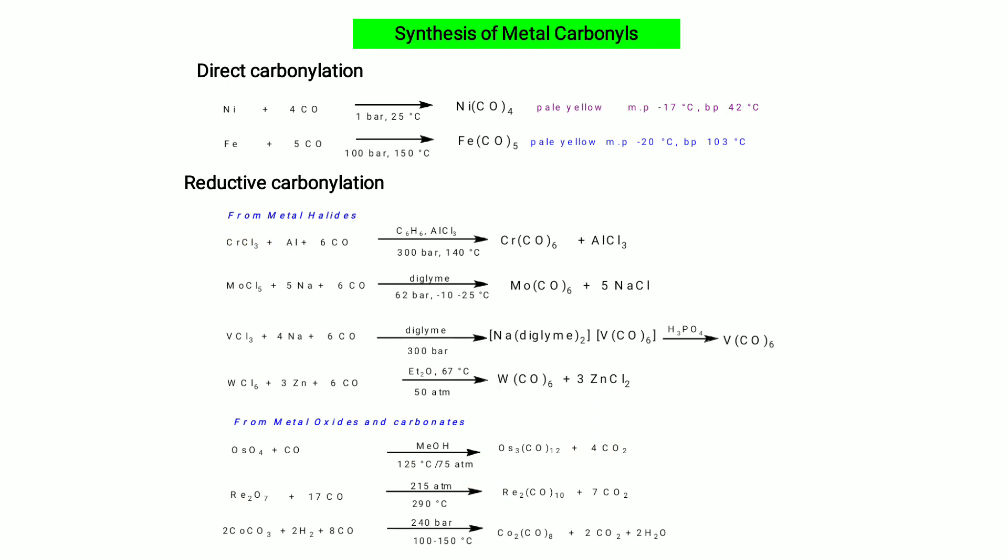Synthesis of metal carbonyls — direct carbonylation: nickel reacts with CO at 25°C and 1 bar to give nickel tetracarbonyl (pale yellow, mp −17°C, bp +42°C). Iron undergoes direct carbonylation at 150°C and 100 bar to give iron pentacarbonyl (pale yellow, mp −20°C, bp 103°C). Reductive carbonylation from metal halides gives hexacarbonyl metal compounds, and from metal oxides/carbonates gives larger clusters such as Os₃(CO)₁₂ and Co₂(CO)₈.